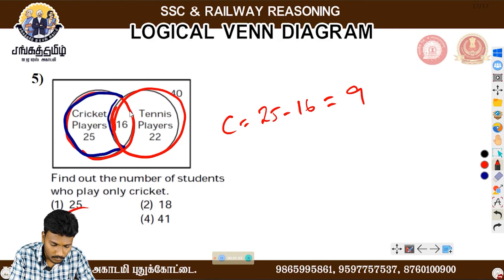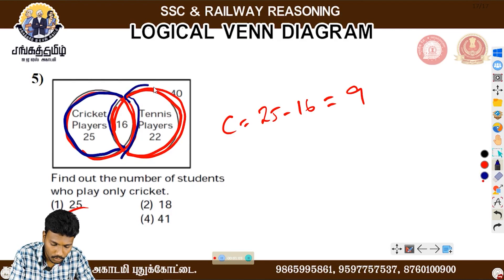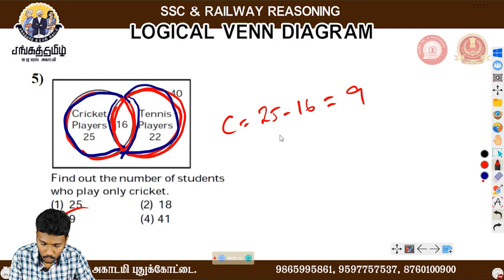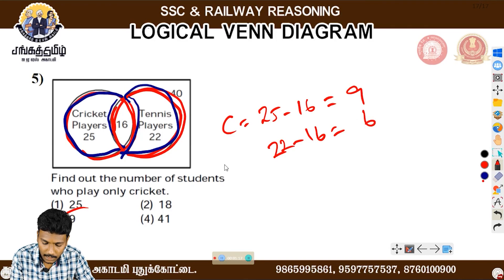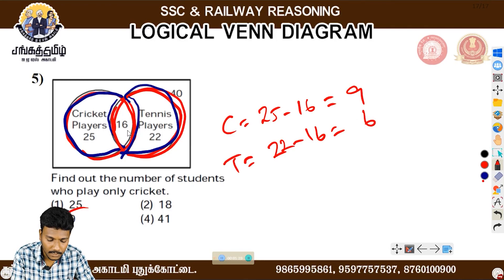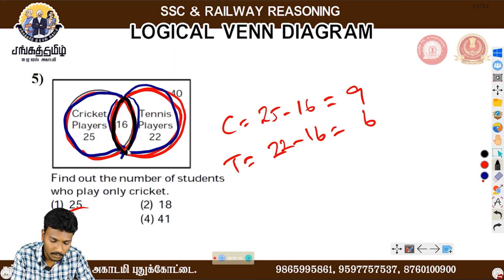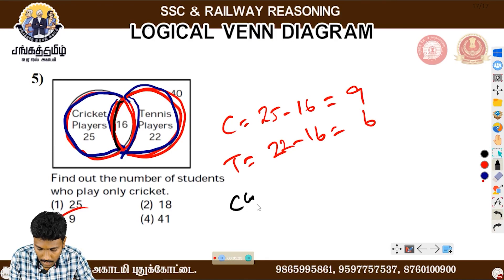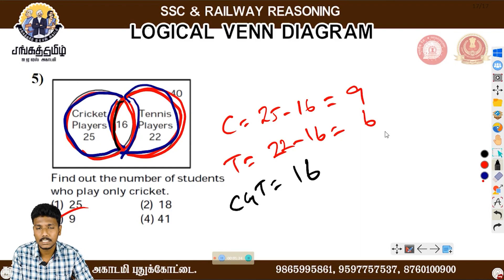Now go to the tennis players. You can go to the part of the tennis player. 22 minus 16 is the only tennis player count. Now you can go to the part of two-sport players. You can go to the part of cricket and tennis. 9 plus 6 is 15, 15 plus 6 is 21, then 31.